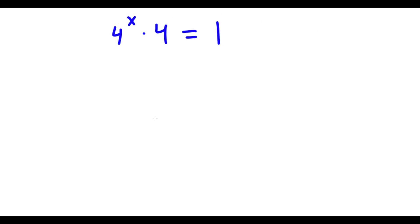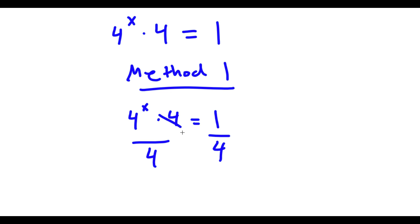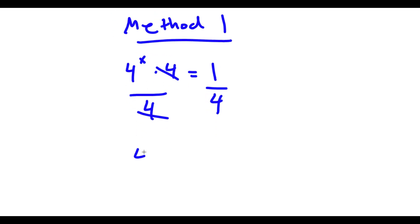From here, I actually have two methods to solve this problem. For method number 1, we start with 4 to the power of x times 4 is equal to 1. I'm going to divide both sides by 4, so these two cancel out, and I'm left with 4 to the power of x is equal to 1 over 4.